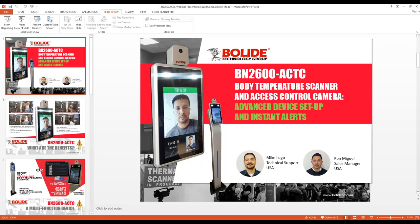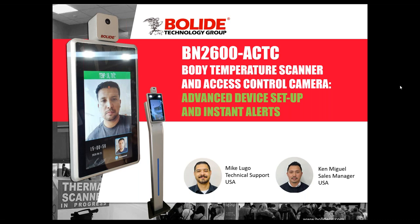We're going to be covering the BN2600 ECTC body temperature and access control camera. This is going to be a little bit different from our last webinar. We're going to go over the advanced device setup — all the settings in the camera menu — as well as the VMS software that comes packaged with the camera. If you guys already bought one of these units, this is going to be super helpful. You'll be able to understand all the steps on how to set it up.